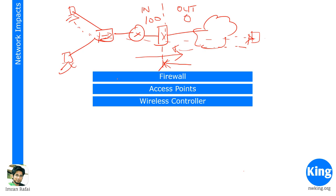Next, access points and wireless controllers. In an organization with a totally wired network and no wireless devices, it's typically very secure because anyone who wants network access must be physically inside your organization. But with wireless access points, that has changed. Your access point does not have a barrier limit — you plug one in your office and it can be accessed by anybody who has the password, or can crack it.